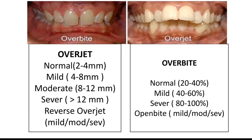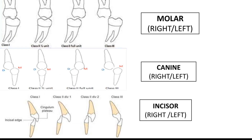These are the different overjet and overbite values. Normal overjet is 2 to 4 mm; 4 to 8 mm is mild; 8 to 12 mm is moderate; and more than 12 mm is severe.